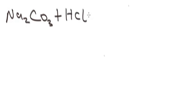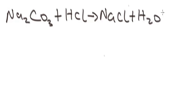Let's begin with this example. We are given these compounds: sodium carbonate. We add hydrochloric acid to yield sodium chloride, plus water H₂O, plus carbon dioxide CO₂. So this is a neutralization reaction. We have an acid reacting with a base to give sodium chloride, water, and carbon dioxide. So how do we balance this chemical equation?